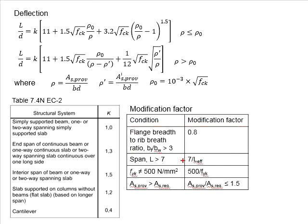So for example, there will be a modification factor of 0.8. This will reduce the limiting L per D ratio and the requirement become more stringent.